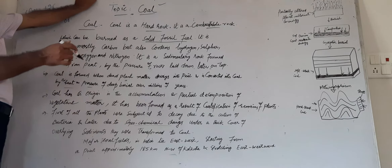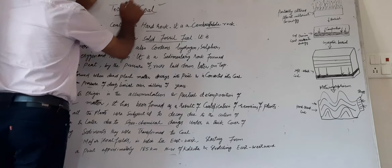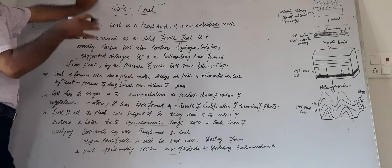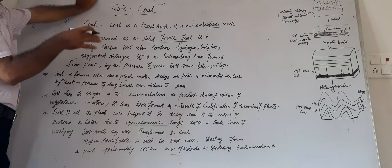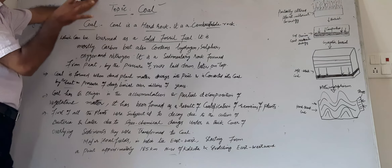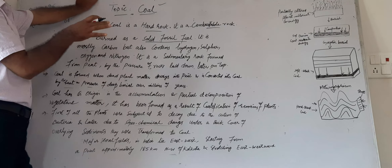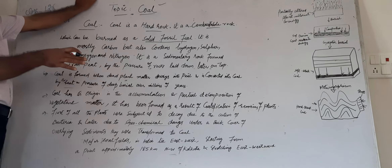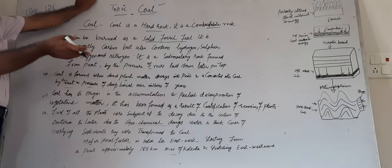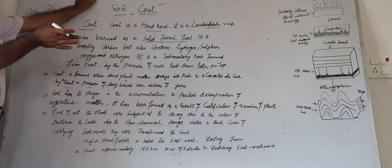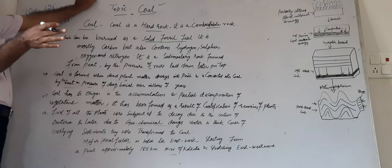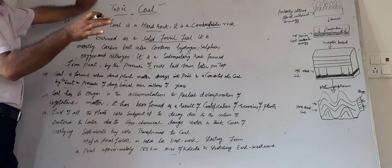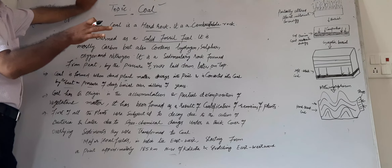We divide coal based on the percentage of carbon it contains. Based on carbon percentage, we have two main types of coal: carbonous and sub-bituminous grade.